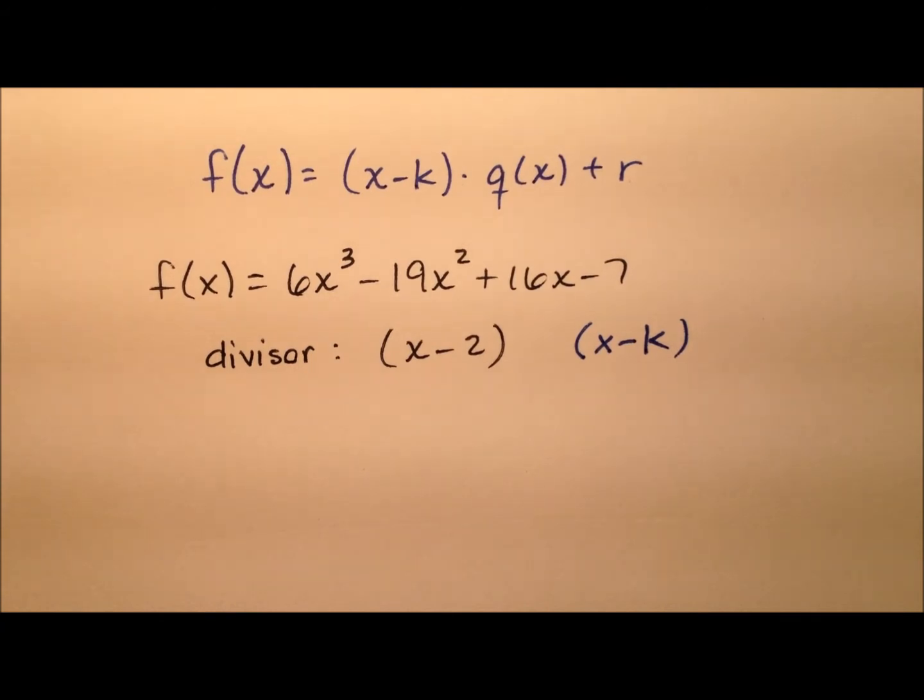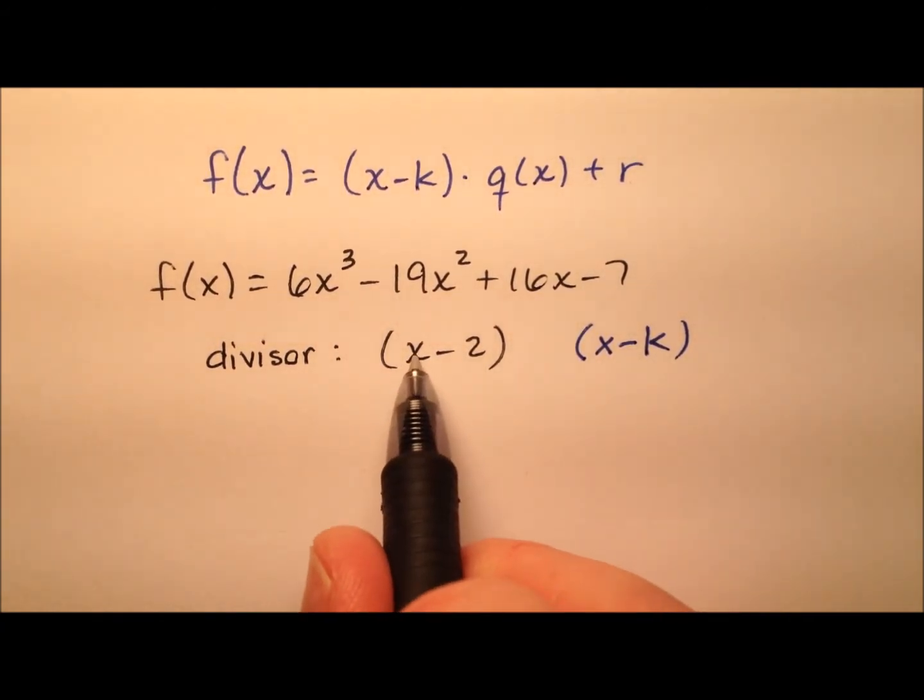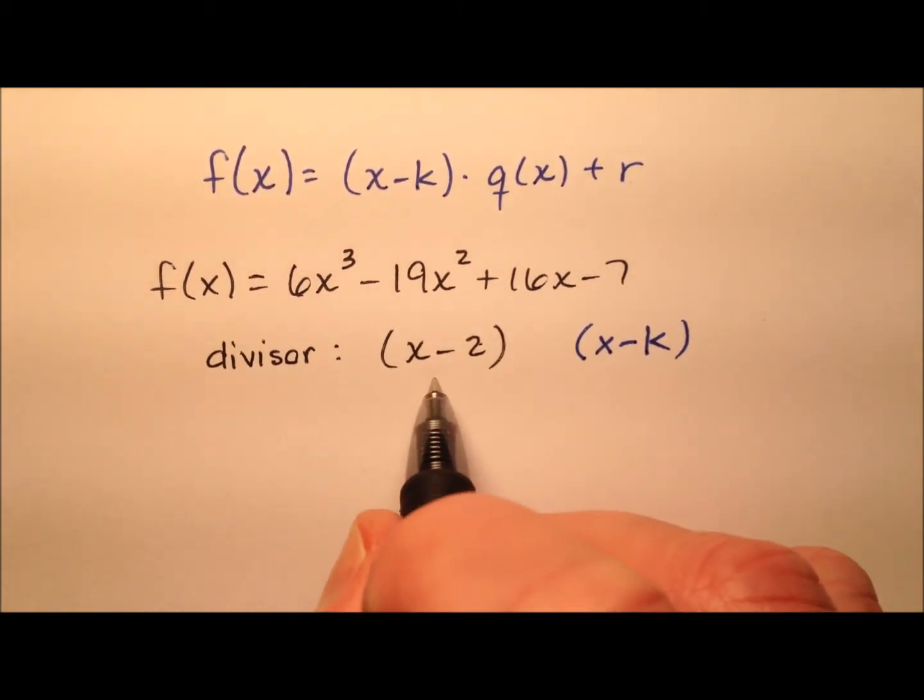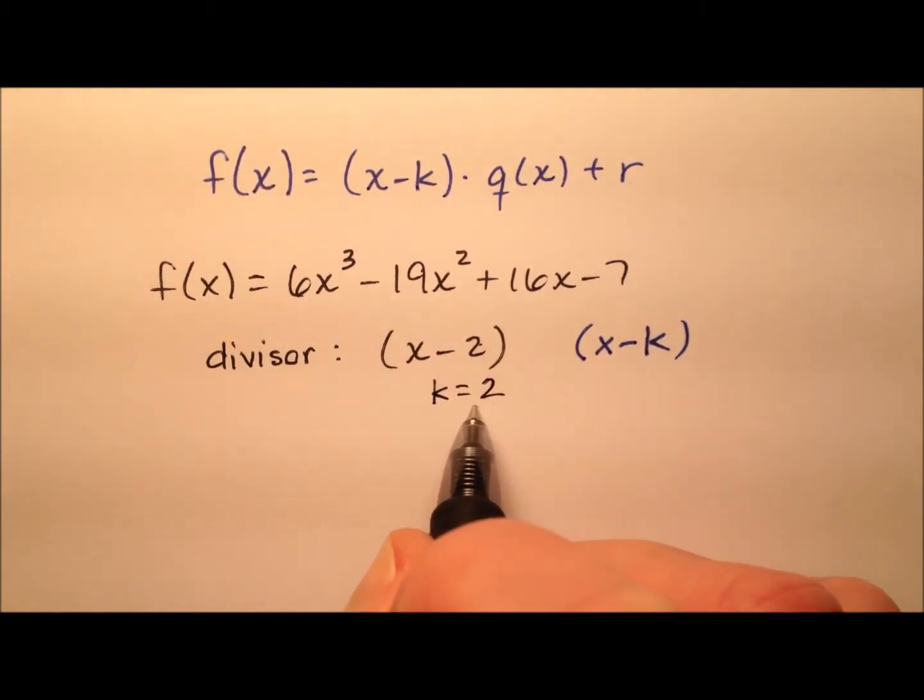Okay, so the way we're going to do this is first by using synthetic division. So if we're using x minus 2 and it's supposed to be in x minus k form, we're going to say that k value is positive 2. So I'm going to go ahead and use our synthetic division, put that 2 out front there.